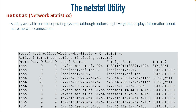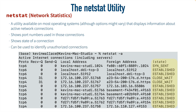NETSTAT can give us information about all of our current connections on a system, including the port numbers used on those connections as well as the connection state. From a cybersecurity perspective, the NETSTAT command is useful for identifying unauthorized connections. For example, if we see a system is listening on port 80, that might mean a malicious party could connect into the system using a web browser.